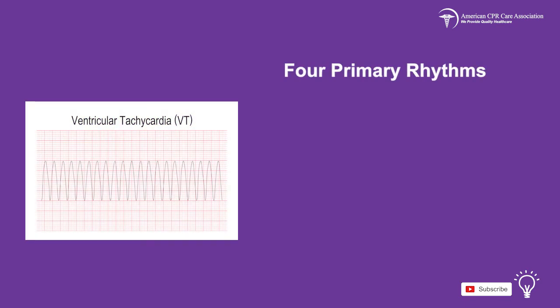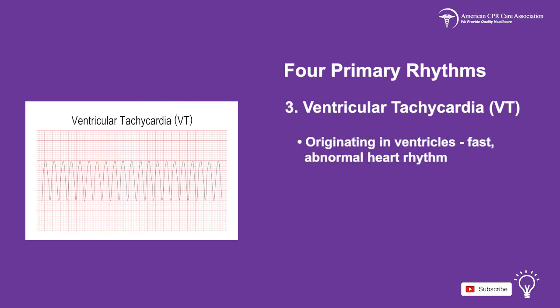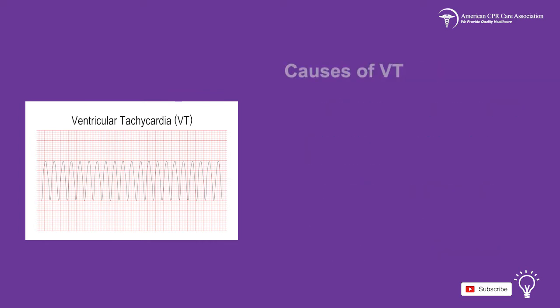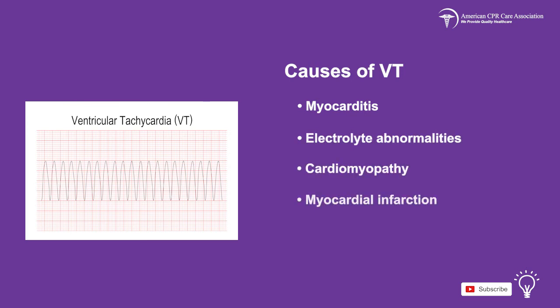Another rhythm seen in cardiac arrest in children is ventricular tachycardia, known as VTAC or VT. This is a fast and abnormal heart rhythm that originates in the ventricles of the heart. VT can lead to VF and cause sudden death. A pulseless VT arises when there is no cardiac output, resulting in no pulse and cardiac arrest. The causes of pulseless VT include myocarditis, electrolyte abnormalities, cardiomyopathy, myocardial infarction, trauma, and drug toxicity.